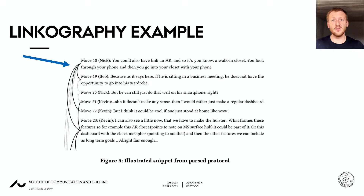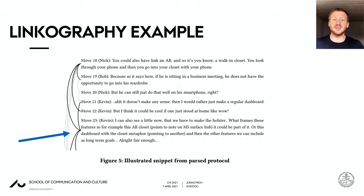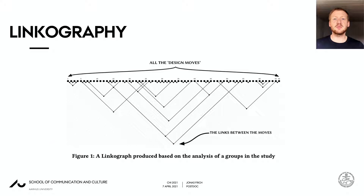These moves are referred to as critical in linkographic analysis and can be determined so due to their directionality. A move which introduces content that is referred to a lot in the future is considered a forward-linking critical move, and a move which considers a high amount of existing moves is considered a back-linking critical move. These special types of moves are theoretically related to convergent and divergent thinking, allowing us to say something about how digital and analog tools impact the creative process.